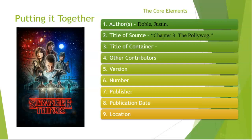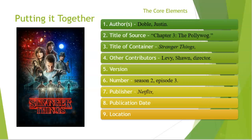Next comes the title of the source, which is the name of this episode: 'Chapter Three: The Polywog,' and this title goes in quotation marks. Then we put the title of the container, which is Stranger Things, and that goes in italics. For other contributors, in this case we might reference the director, Sean Levy, noting that he's the director. Other contributors might include an actor's name or a makeup artist depending on what you're discussing. We don't have a version for this source. Next comes the number — this is where we put the season and episode number. The publisher is Netflix, and Netflix is italicized.